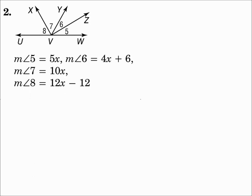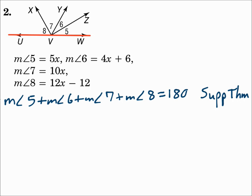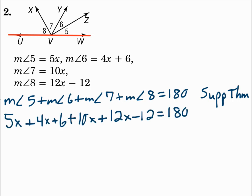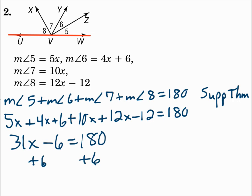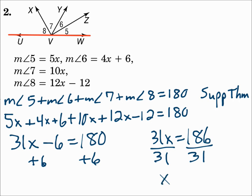Number 2: looking for the measures of angles 5, 6, 7, and 8. When these are all put together, they form a straight line, so all of those angle measures have to add up to 180 — that's the supplement theorem. Substitute in the values for each angle and solve for x. Combining like terms gives 31x − 6 = 180. Add 6 to both sides: 31x = 186. Divide both sides by 31, and x = 6.